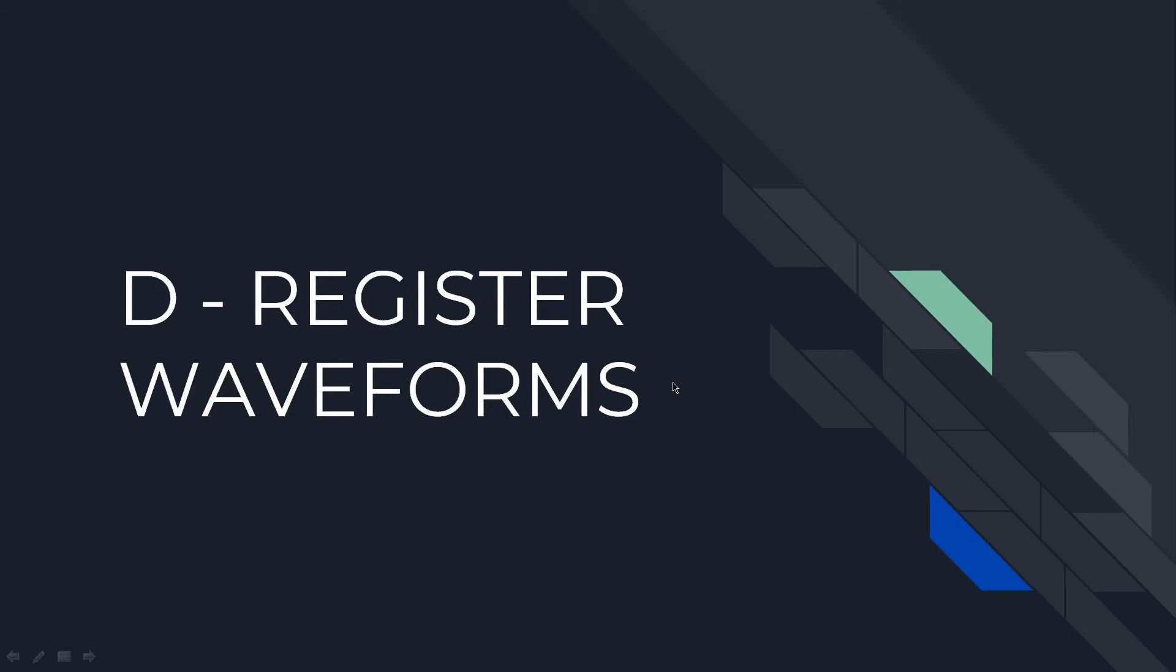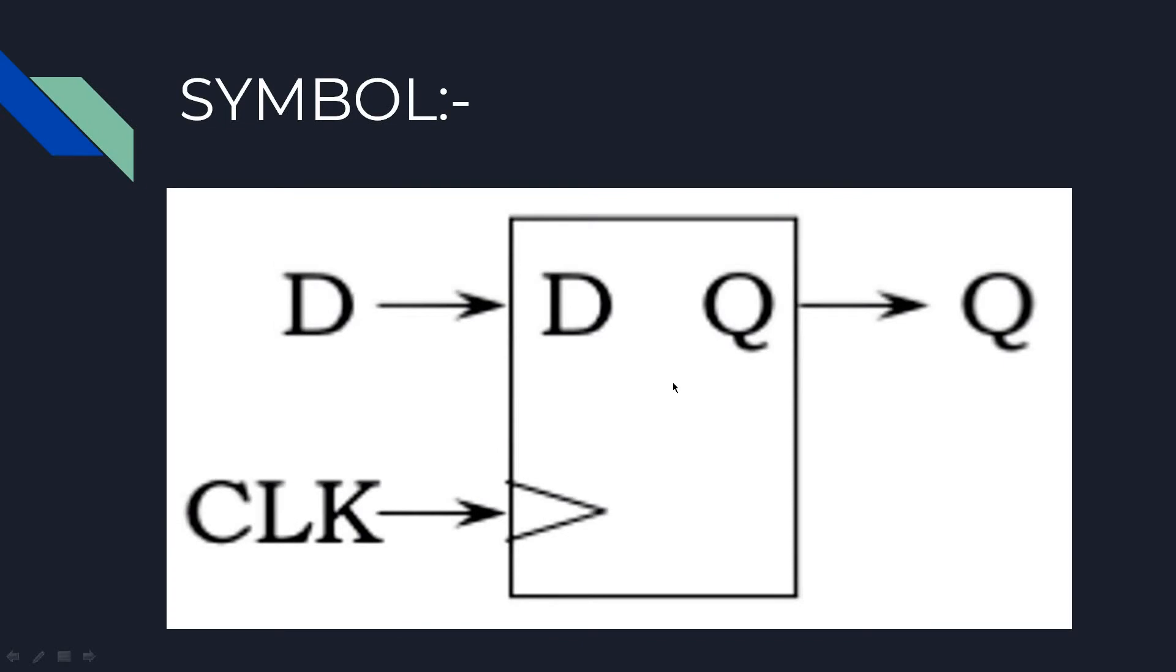Let us first look into the symbol of the D-register. This is the symbol of the D-register where you have the data input signal, the clock signal, and this implies the positive edge triggered circuit, and the Q output signal.